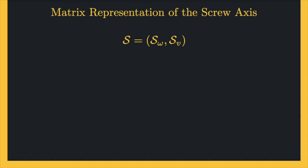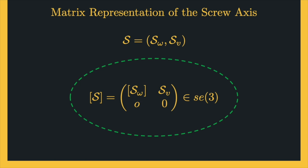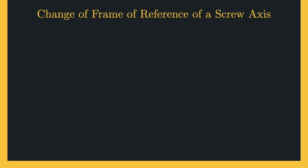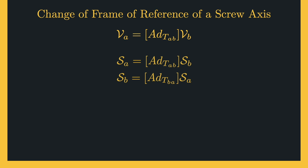Since the screw axis is a normalized version of the twist, the matrix representation of the screw axis can be defined as this matrix. For more information on why it has this form, please refer to the lesson on velocities in robotics. Now let's see how we can change the frame of reference in which a screw axis is defined. As we saw in the lesson on velocities in robotics, the adjoint transformation can be used to change the frame of reference of the twist, and since the screw axis is a normalized version of the twist, we can use the adjoint transformation for the screw axis as well.